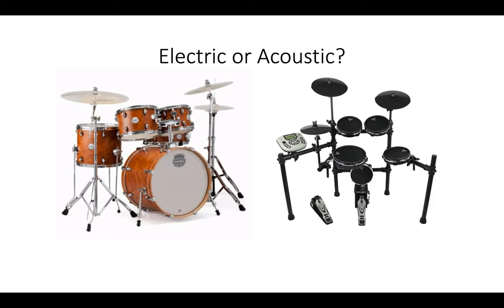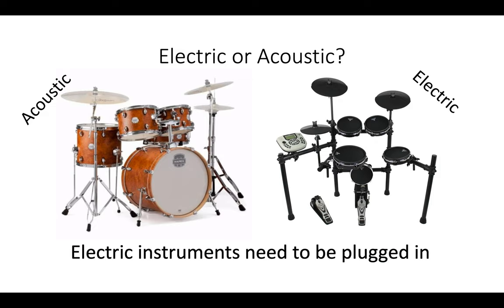Which of these is an electric kit and which is an acoustic kit? See if you can spot the difference by looking at it. Well done if you got that right. The acoustic kit is bigger and the drums have lots of hollow space inside them to create that real booming sound. The electric kit can be made much smaller, much more compact, and is plugged in to create the sound. That is the big difference between electric and acoustic — electric instruments need to be plugged in. It really is as simple as that.